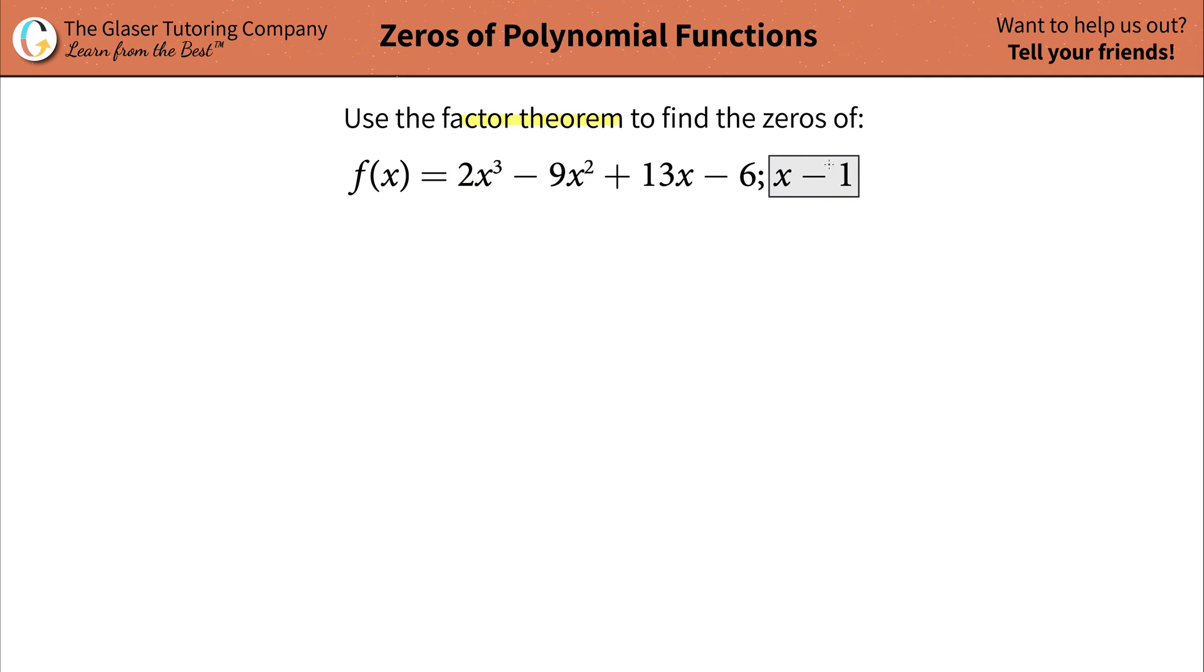Now what they gave us is that they also gave us a factor, so that we can kind of apply this factor theorem. So basically what the factor theorem tells us is that if you take this factor and you divide it into this polynomial function and you get a remainder of zero, then this is a factor.